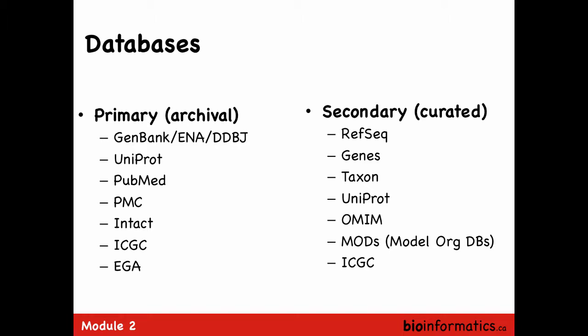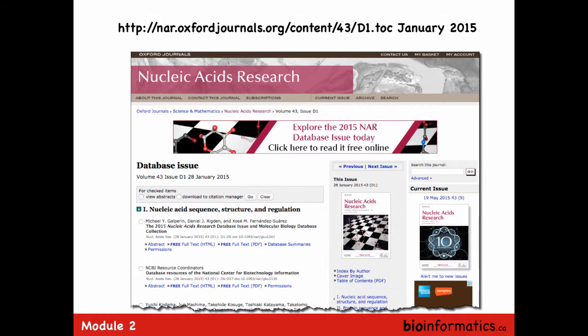There are layers of databases. From a primary research perspective, you may only work in archival databases — those that just store all the data with associated metadata and annotations. A more valuable space, especially when trying to make biological interpretations from your data, is the secondary data — the highly curated data with human oversight. Somebody has gone in and said these are the reference sequences and the correct annotation for this particular gene. The secondary databases are really, really valuable.